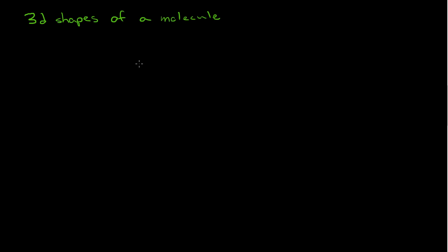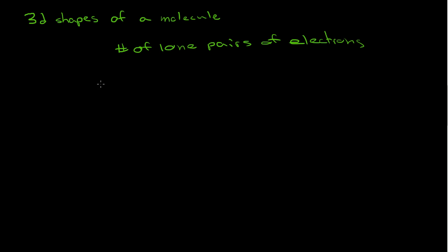The only two factors are: number one, the number of lone pairs of electrons, and number two, the number of atoms surrounding the center atom.